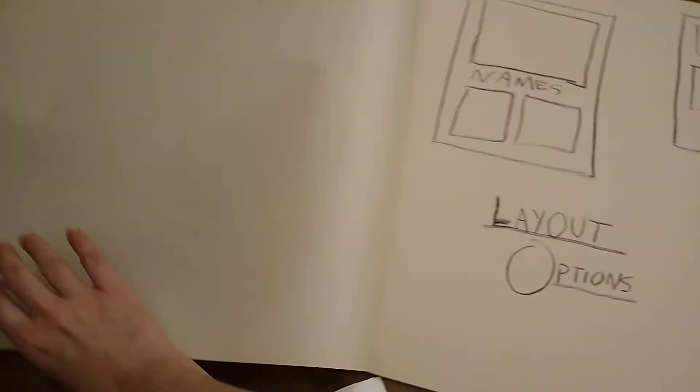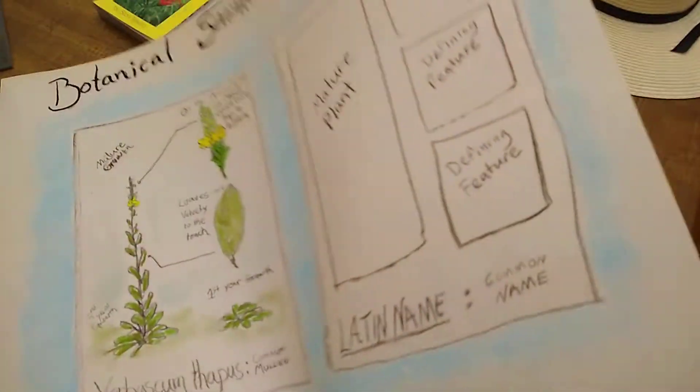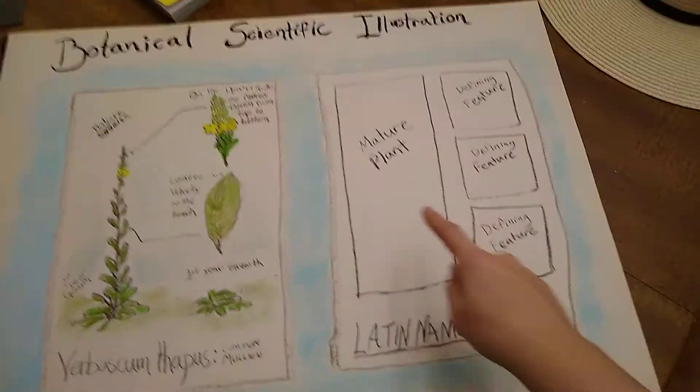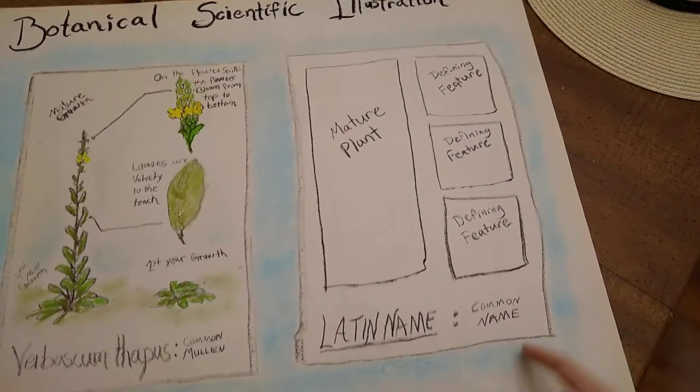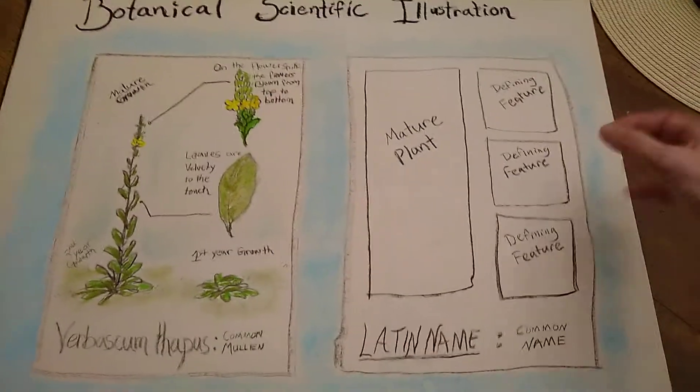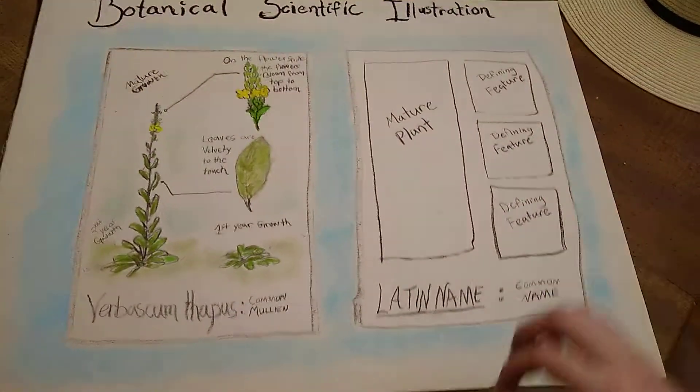Whichever layout you choose to do, as long as you have a picture of the mature plant, the latin name, common name, and your defining features, you've got a good scientific illustration.